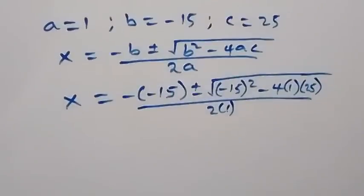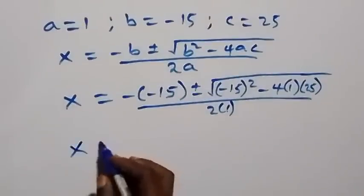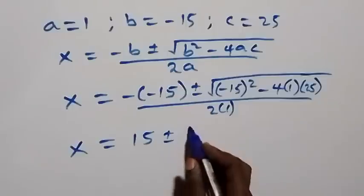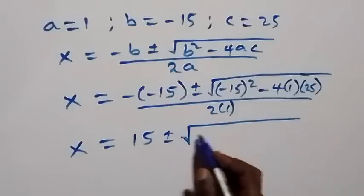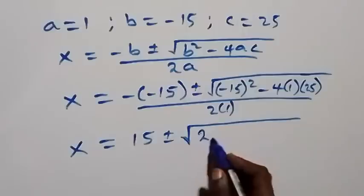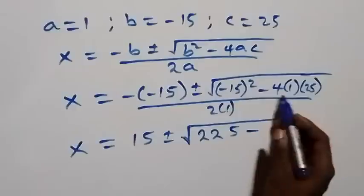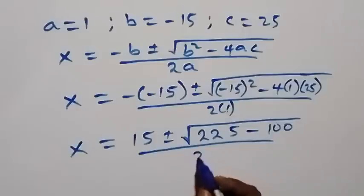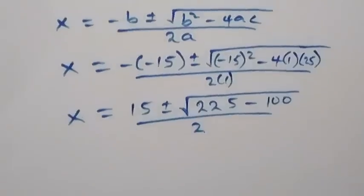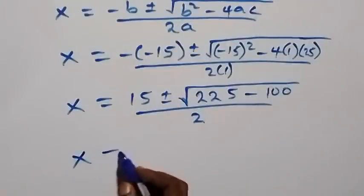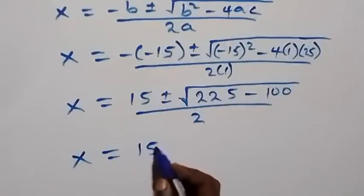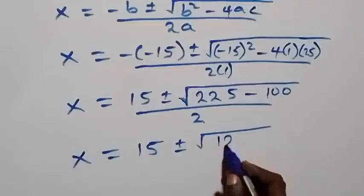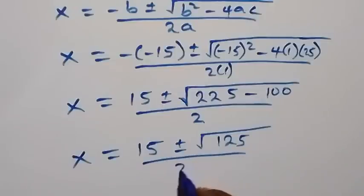Solving from here: x = 15 ± √(225 − 4 × 1 × 25) / 2 = 15 ± √(225 − 100) / 2 = 15 ± √125 / 2.